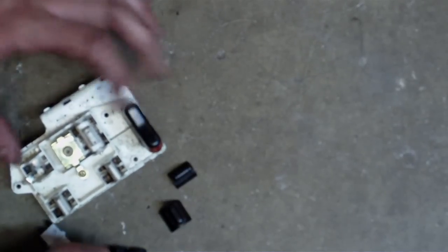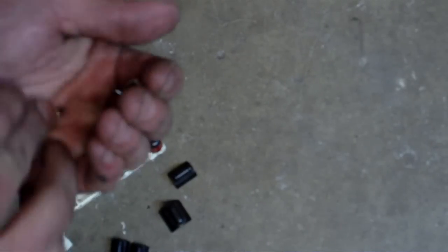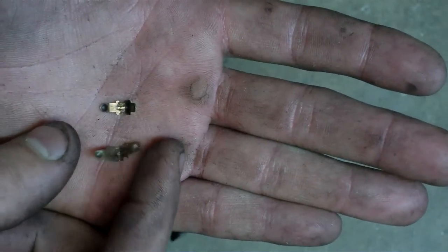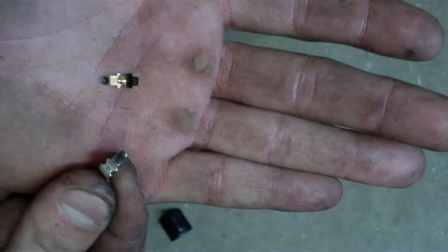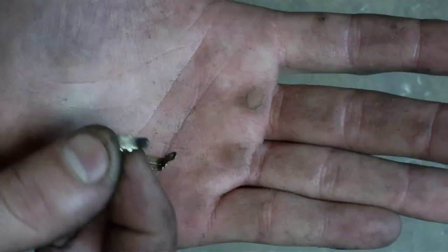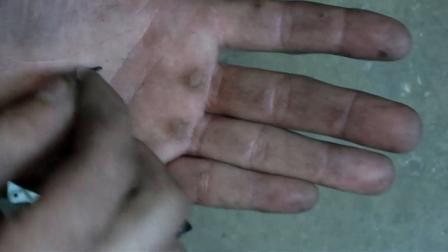Now you've got these terminals I was telling you about. They're down inside there - you can look. They're just little copper terminals. But if you look, see the black soot on there? That's what doesn't make contact when you're trying to switch it up and down.